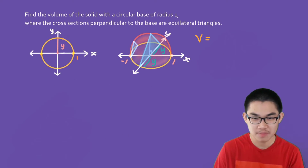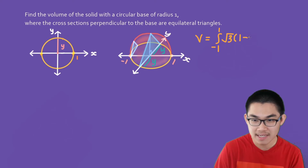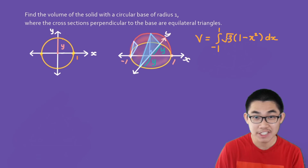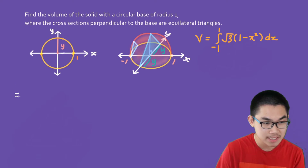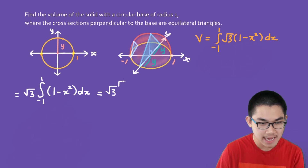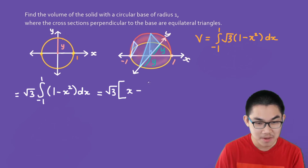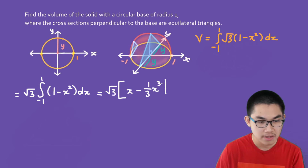So the volume is V equals the integral from negative 1 to 1 of A(x) dx, which is the integral from negative 1 to 1 of the square root of 3 times (1 minus x squared) dx. Since the square root of 3 is a constant, we bring it outside the integral: square root of 3 times the integral from negative 1 to 1 of (1 minus x squared) dx. Taking the antiderivative gives x minus one-third x cubed, evaluated from negative 1 to 1.